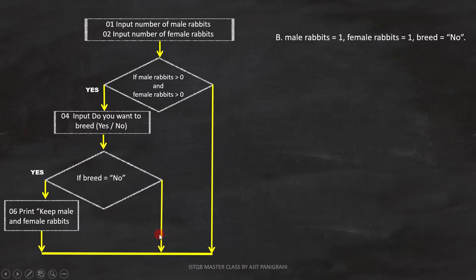Option B is male rabbits equal 1, female rabbits equal 1, breed equals no.